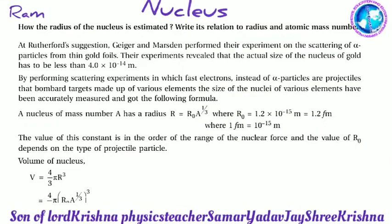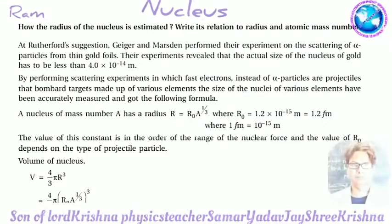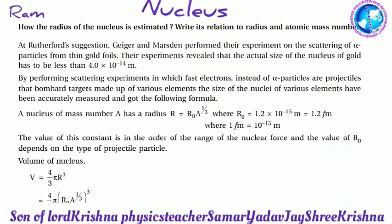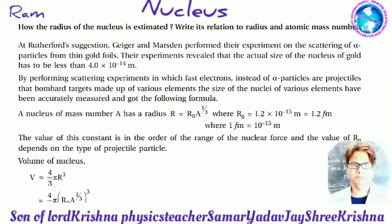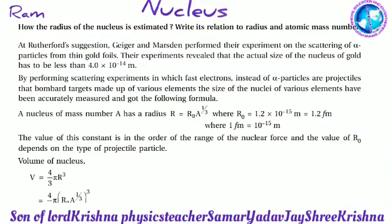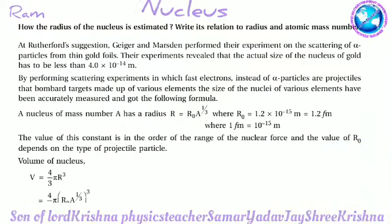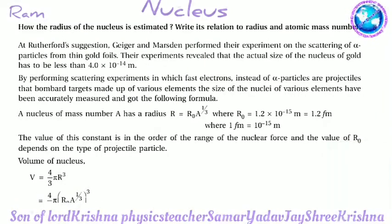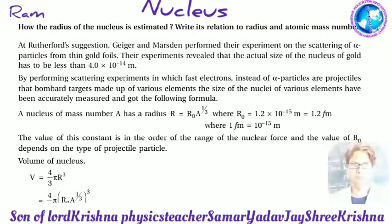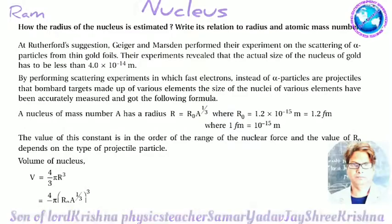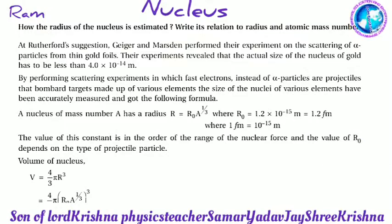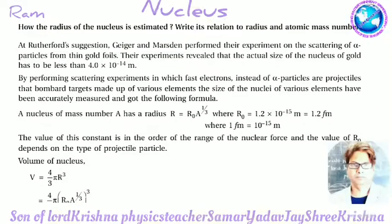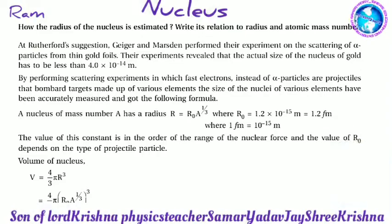At Rutherford's suggestion, Geiger and Marsden performed their experiment on the scattering of alpha particles from thin gold foil. Their experiments revealed that the actual size of the nucleus of gold has to be less than 4 × 10⁻¹⁴ m.